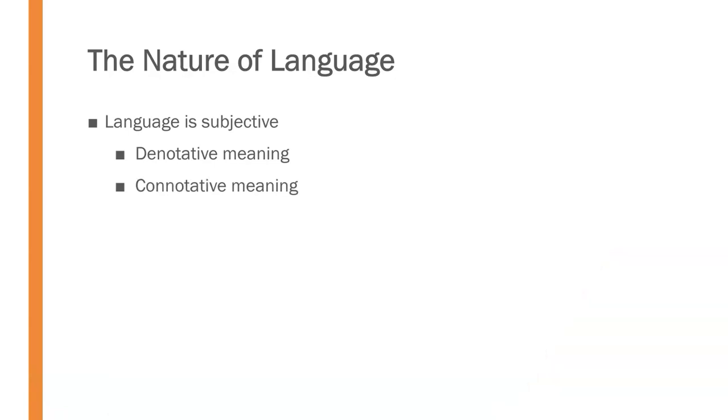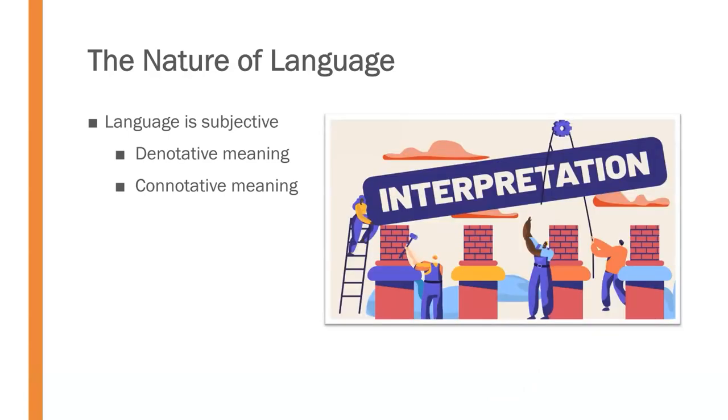The second type of meaning is the connotative meaning. The connotative meaning is more subjective and connected to the interpretation of the individual. It is heavily influenced by an individual's frame of reference, the perceptual filter comprised of each person's unique collection of beliefs, values, experiences, knowledge, and other attributes that make them who they are.